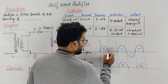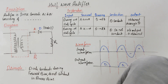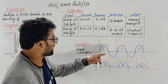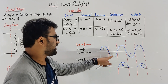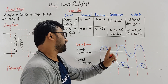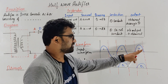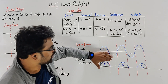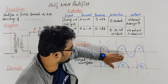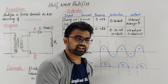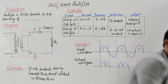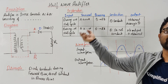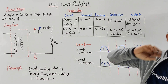I think I erased something I shouldn't have — this should not be erased. The output waveform should be there. So: during the positive half cycle, diode D conducts and you get the output. During the negative half cycle, there is no output at all. During the positive half cycle you get the output; during the negative half cycle there is no output. Basically you only get this much — just the positive half cycle. That is the half wave rectifier.